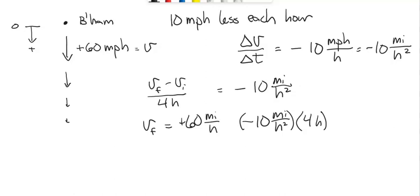And that's what we have, so 60 miles per hour minus 40, the hours cancel and 10 times 4 is 40 miles per hour, is equal to positive 20 miles per hour. And that's the answer.